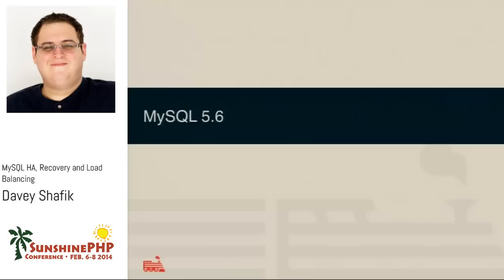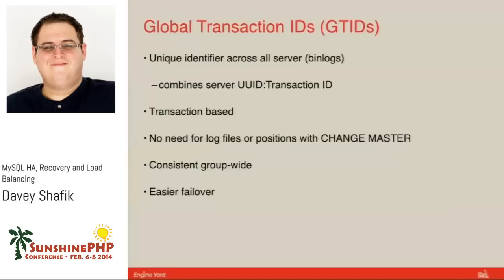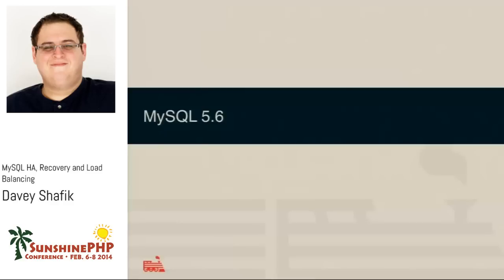I originally gave this talk with a good friend, Ligaya Turmel, and while writing the slides she said, 'Have you heard about the new stuff in 5.6?' They added Global Transaction IDs — GTIDs. These are a unique identifier across all servers, across all the bin logs, combining the UUID and the transaction ID. There's no need for log files or positions when you do a change master. Anyone who's set up replication with MySQL knows you have to stop your master, check your log position, restart it, and then change the slave to point to the exact position. With GTIDs you don't have to do that anymore — it's possible to automate it and set it to auto. It's fantastic.